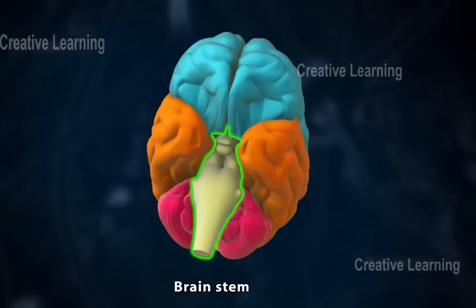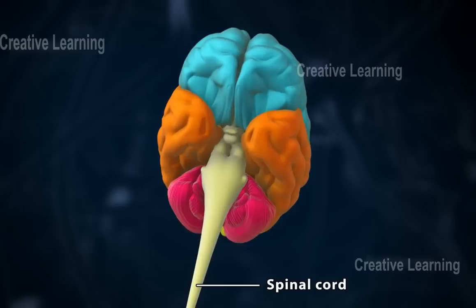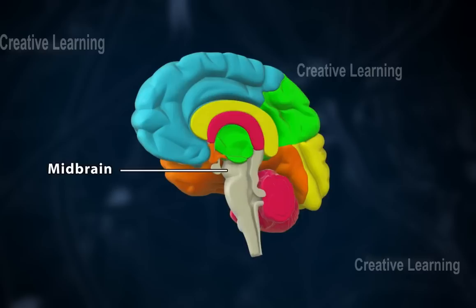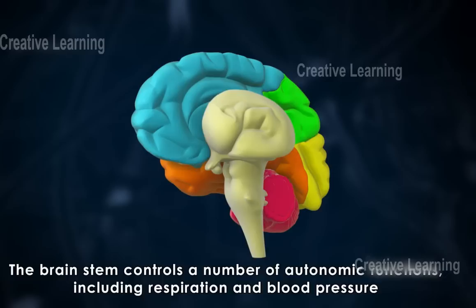The brain stem is located beneath the cerebrum and in front of the cerebellum. It connects the brain with the spinal cord and is composed of the midbrain, pons, and medulla oblongata. The brain stem controls a number of autonomic functions, including respiration and blood pressure.